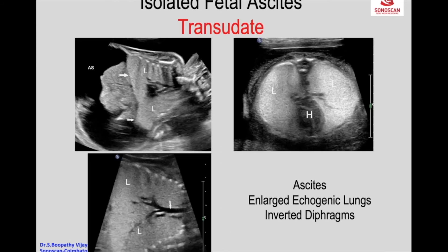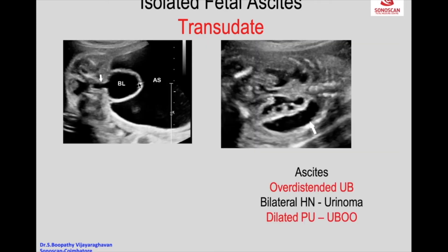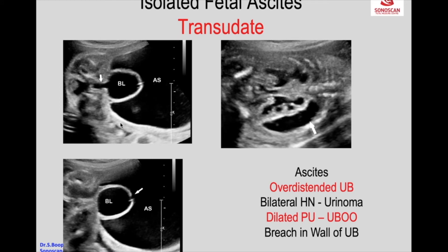High airway obstruction reveals a dilated, fluid-filled trachea and bronchi — dilated bronchi — typical appearance of congenital high airway obstructive syndrome (CHAOS). Urinary bladder outflow obstruction with a breach in the wall of the urinary bladder has resulted in urinary ascites.